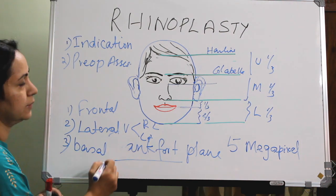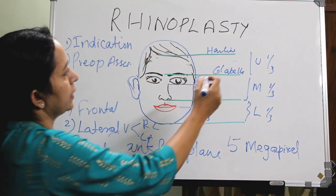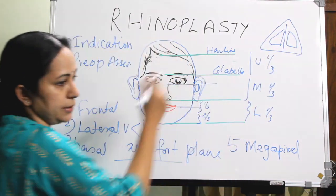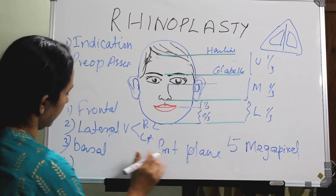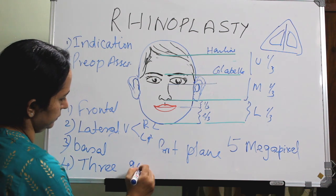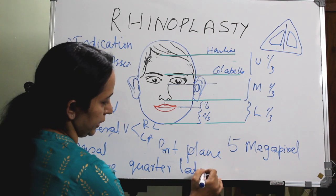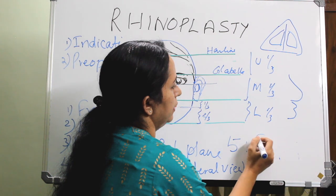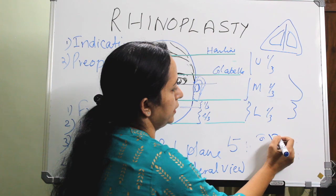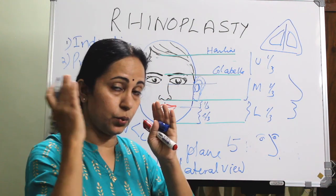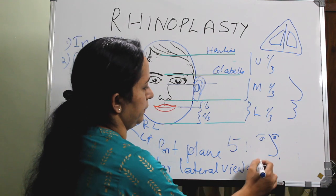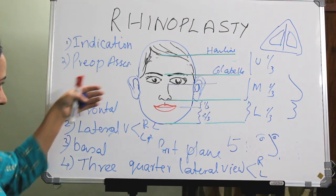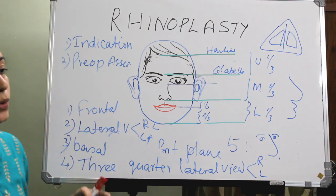The basal view is taken by asking the patient to tilt the face upward so that the lower area of the nose is obtained. Then a three-quarter lateral view is taken — both right and left — where the eye, nose, and part of the other eye are visible. In total, six photographs are required: frontal in Frankfurt plane, right and left lateral, basal view, and right and left three-quarter lateral views.